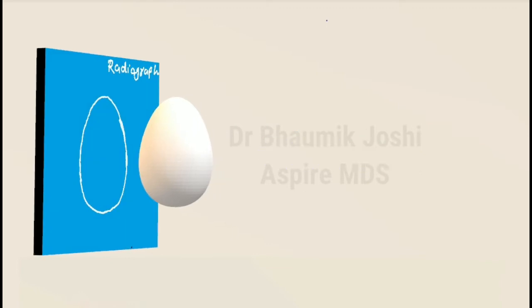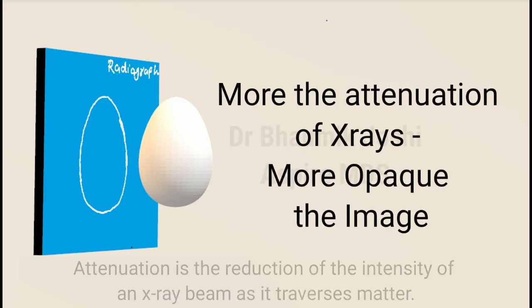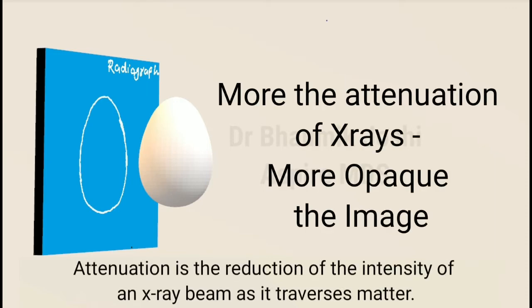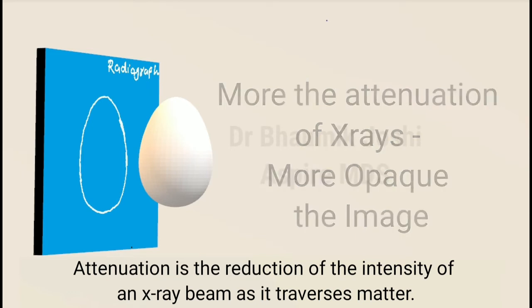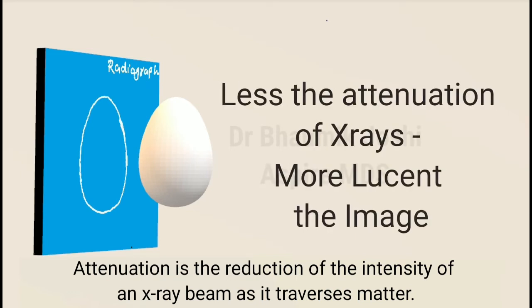Now we know one principle: when you are taking a radiograph of an object, if the x-rays are attenuated, the image will be radio-opaque, and when they are not attenuated, the image will be more radiolucent.